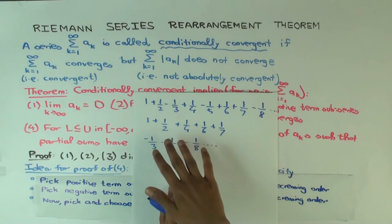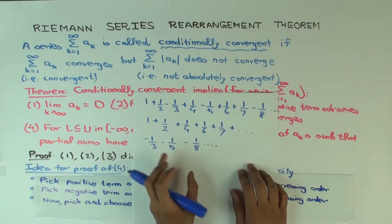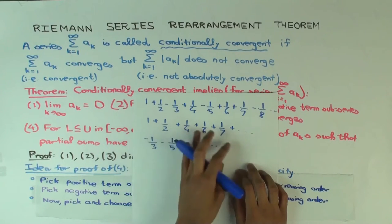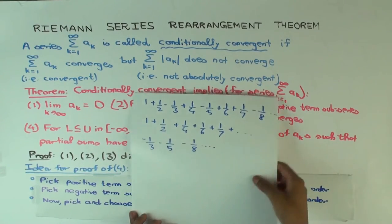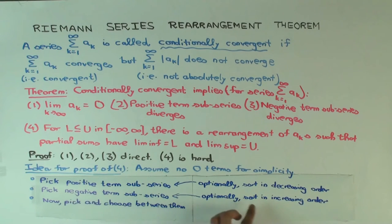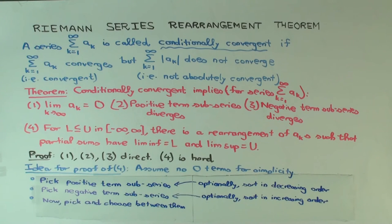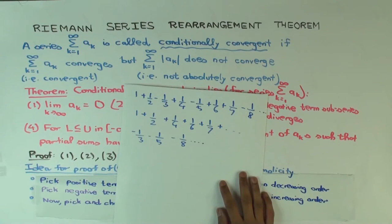The idea is simple. We construct the positive term subseries and the negative term subseries. To construct the rearrangement, we will not move things around within the positive and negative subseries — we'll just pick some things from the positive subseries, then from the negative, then more from the positive, and so on. We're not changing the ordering within each subseries.